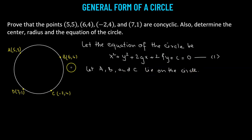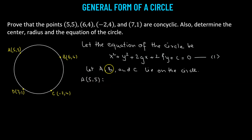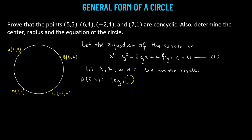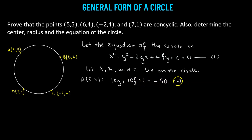Since these points must satisfy the equation of the circle, starting with point A having coordinate (5, 5), we replace x with 5 and y with 5. We get a new equation: 10g plus 10f plus c equals negative 50. We label this as equation number 2.